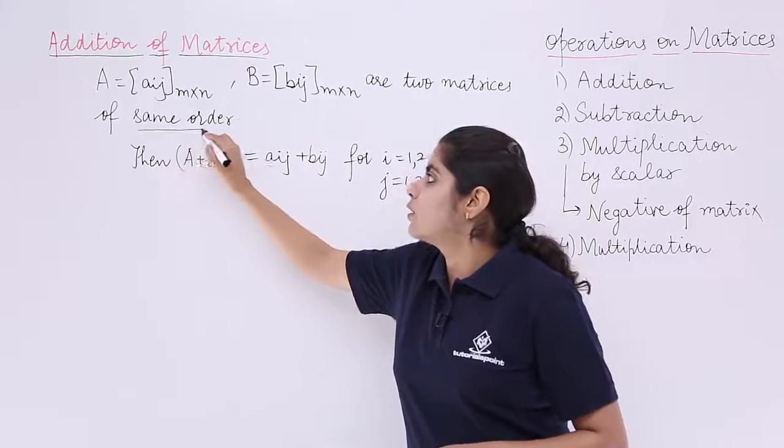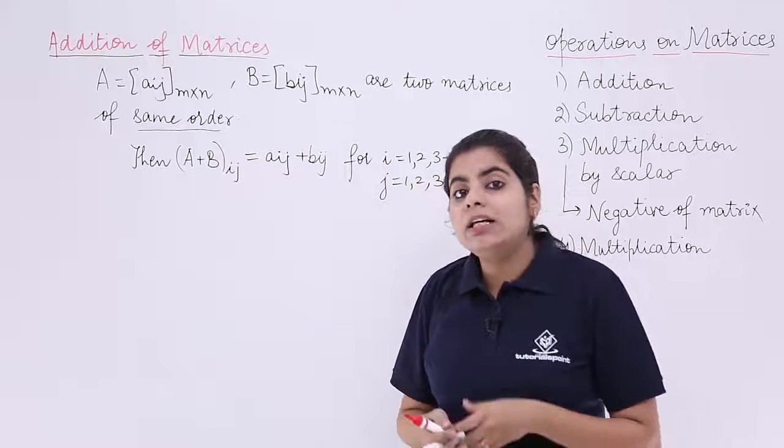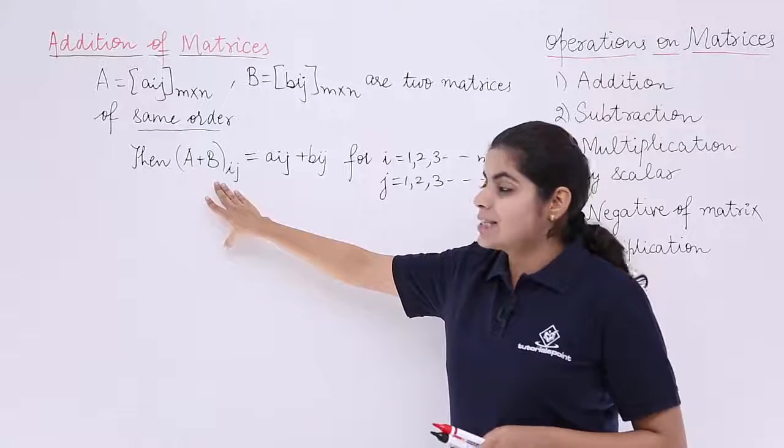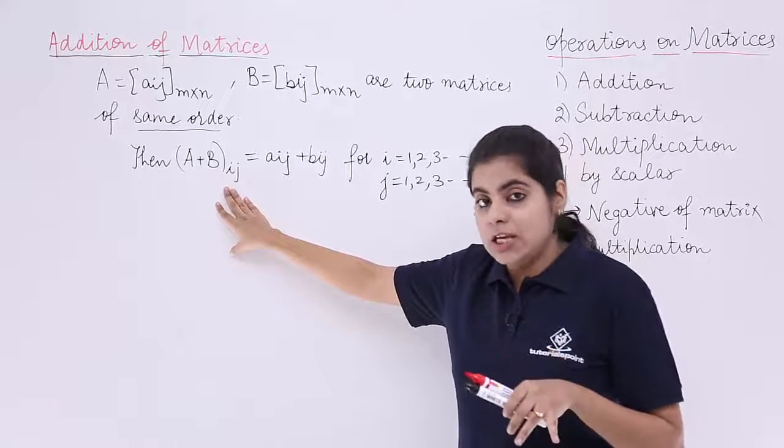Now after addition what will happen? The addition will happen in the following manner: A plus B subscript ij is written. ij means the first matrix first element plus second matrix first element added.